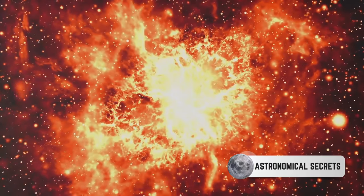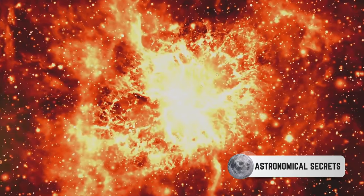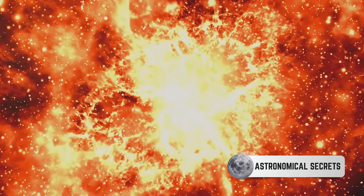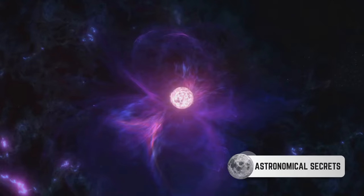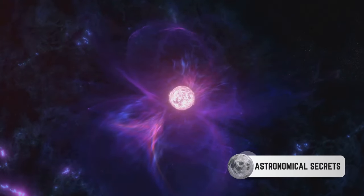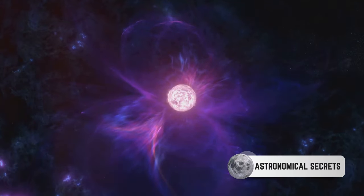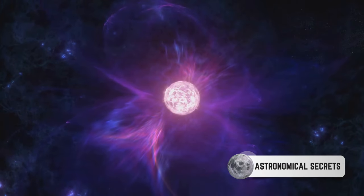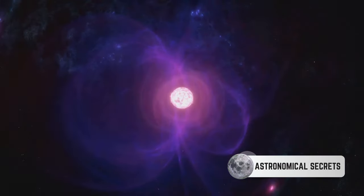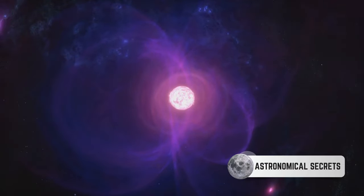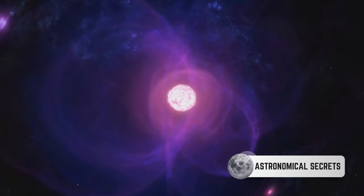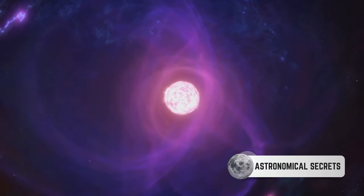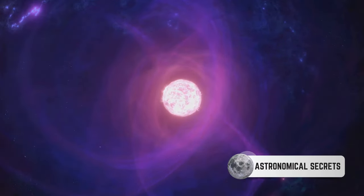But Wolf-Rayet stars aren't just about star life cycles. They're also cosmic alchemists, forging elements within their fiery hearts. You see, these stars create heavy elements such as carbon, oxygen, and nitrogen through nuclear fusion. When they eventually explode as supernovae, they scatter these elements across the cosmos. This process is essential for the formation of planets and life as we know it. In a very real sense, we're all made of stardust, and Wolf-Rayet stars are some of the universe's most prolific stardust makers.